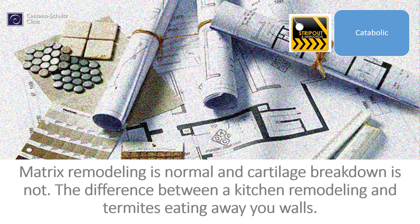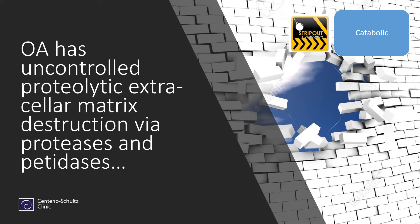you first have to have the demo guys come in and take out all the old stuff, then come back in and put the new stuff in — the same thing happens in the knee. If you're going to repair cartilage, you have to break it down first and then repair it. But sometimes you get chronic catabolism — chronic excessive demolition — and that's like termites eating away at the walls of your house, which is not good for the joint. Osteoarthritis has this uncontrolled breakdown, which happens through proteinases and peptidases.